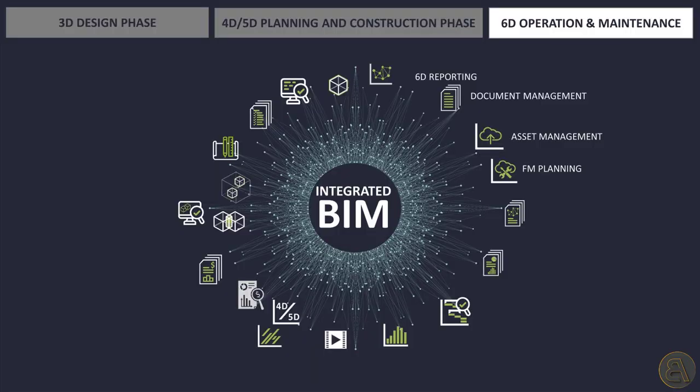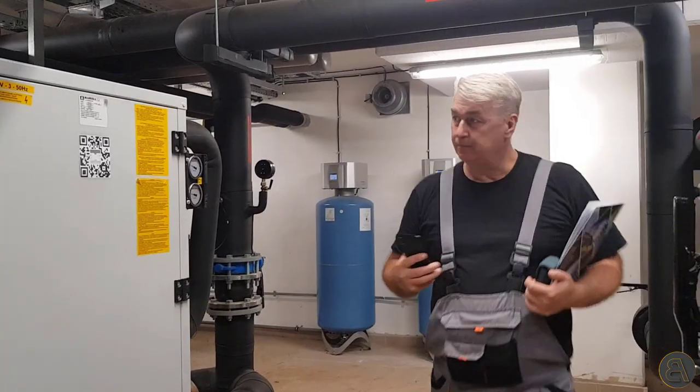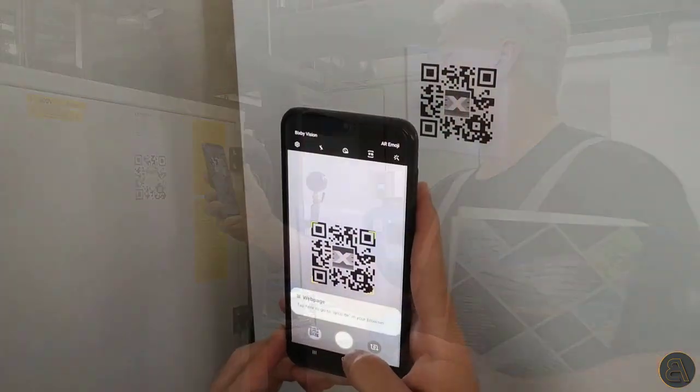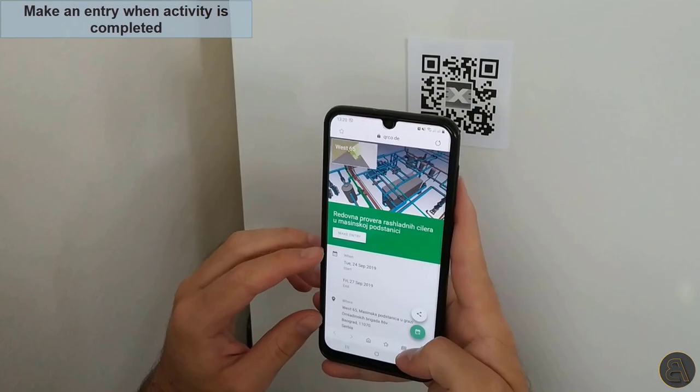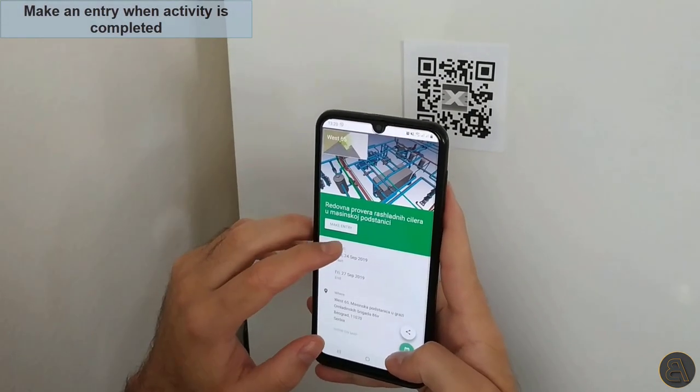The last phase is operation and maintenance. Facility maintenance is dependent on the information database established in the previous phases. We can use the BIM model and data layers within it for facility maintenance planning, asset management, attaching relevant documents for document management, as well as 6D reporting.